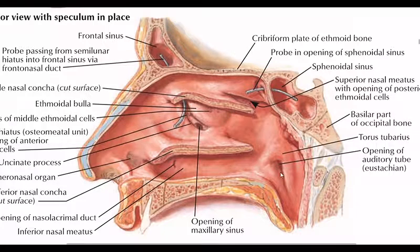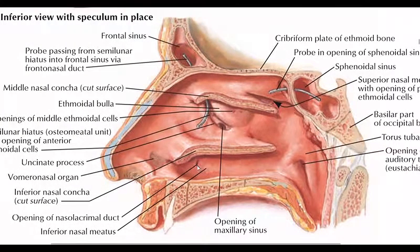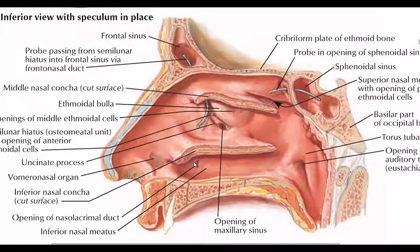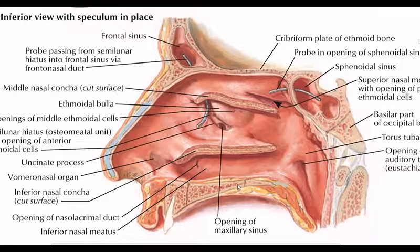There is a nasal lacrimal duct which is important clinically. If there is an infection, it can also spread to the brain, and via the nasal lacrimal duct it can also affect the eye. I have shown the cribriform plate — if it is torn, then CSF can escape through the nose. This is called CSF rhinorrhea.